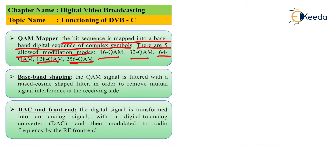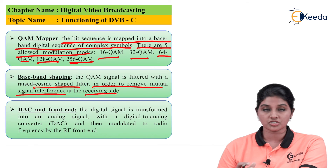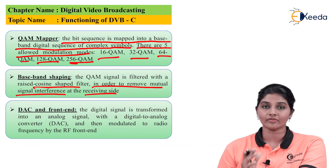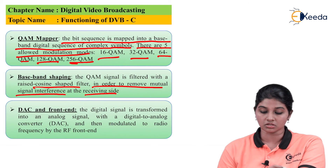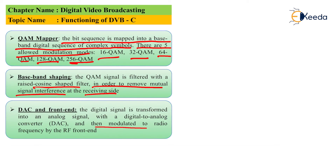Next is baseband shaping, where the QAM signal is filtered using a cosine-shaped filter in order to remove mutual signal interference at the receiver. The baseband shaper is essentially a filter circuit used for filtering operation. Finally, the digital-to-analog converter transforms the digital signal into analog form, and then the signal is modulated to radio frequency using the RF frontend.